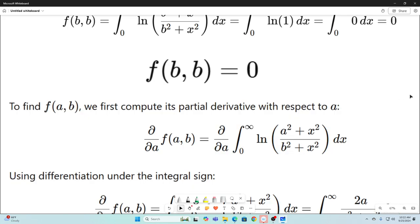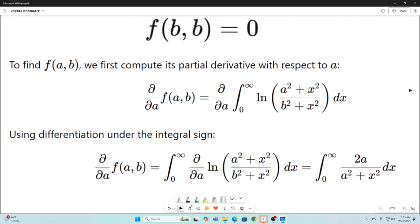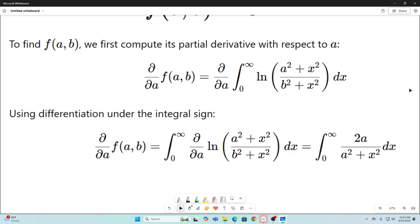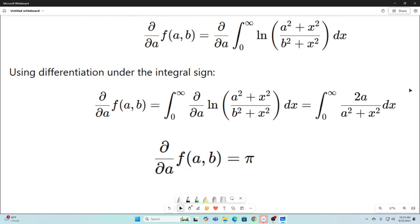All right, now to find our f(a,b), we're going to compute its partial derivative with respect to a. And then we'll use differentiation under the integral sign to find that the partial with respect to a of our function is equal to the integral from 0 to infinity of 2a over (a² + x²) integrated with respect to x. That integral easily evaluates to π. So our partial with respect to a of our function f(a,b) is equal to π.